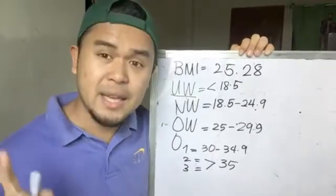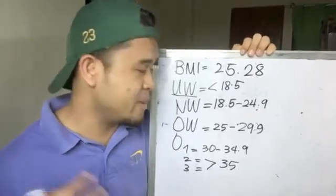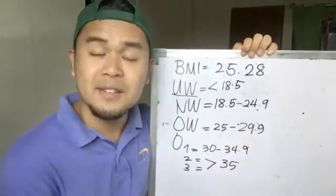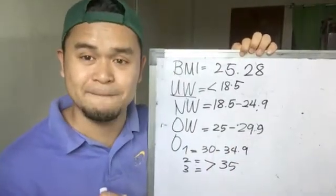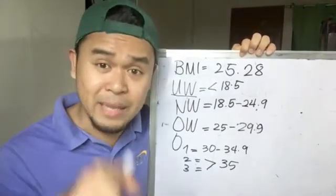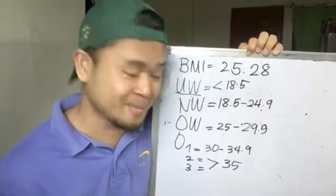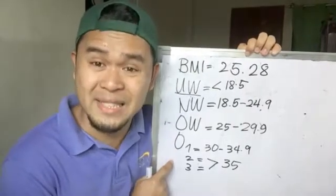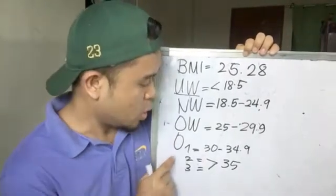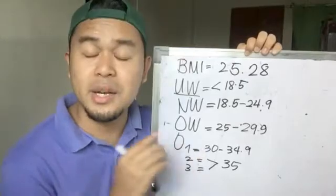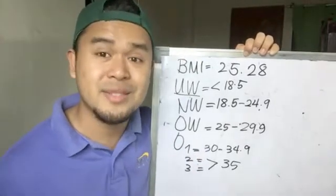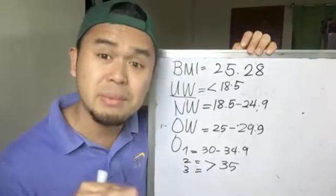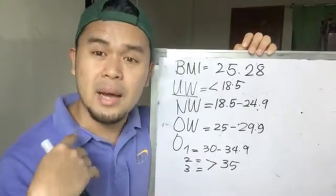Next, overweight means you have a BMI of 25 to 29.9. Obese is a BMI of 30 to 34.9, and extremely obese is above 35. So where does my BMI of 25.28 fall?